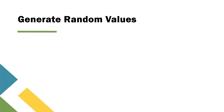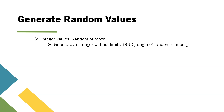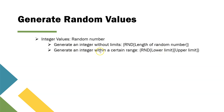The first way is generating random integer values — random numbers which can be generated by Tosca and entered into any field which accepts numerical data. There are two ways of doing it. One is generating an integer without limits, where you use the expression RND in square brackets with the length of random numbers — it could be 10, 9, 50, or 100. This will generate a random number of that particular length as defined by you.